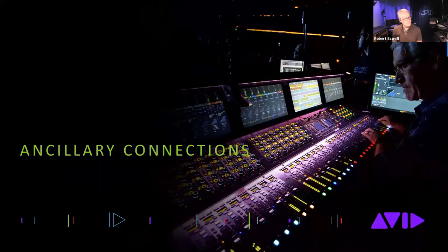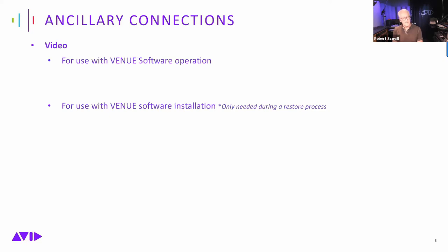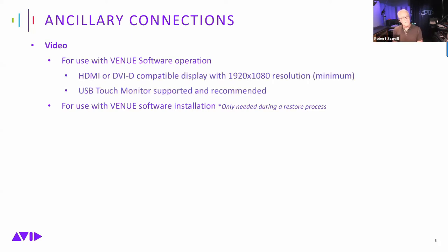Let's talk about video connections first. We have connections for two video monitors in an S6L system. The primary one, used for Venue software operation — the screen you usually see off to the side of the console — requires an HDMI or DVI-compatible display with 1920x1080 resolution minimum.